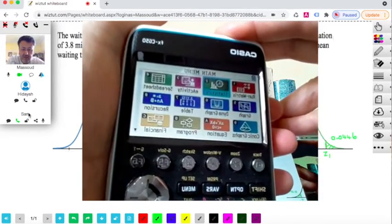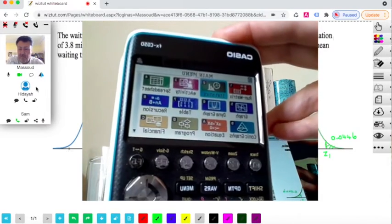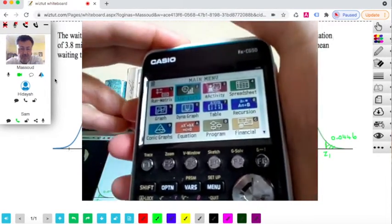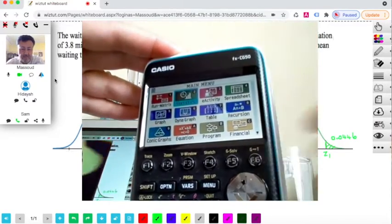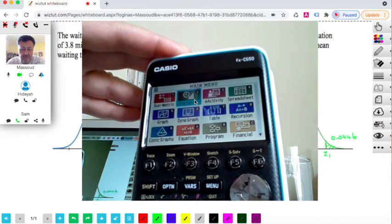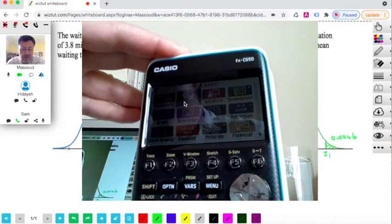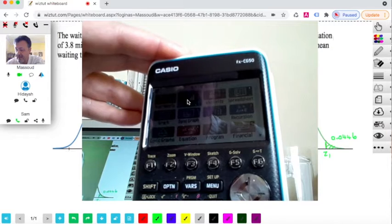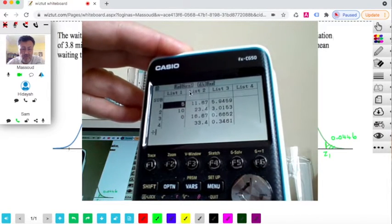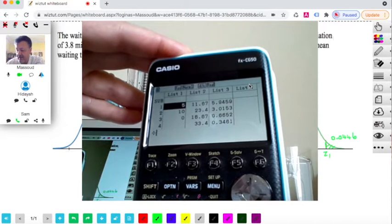And I hope that you can see the screen well enough. So on these calculators, let me turn the calculator around so you can see the options better. So on these calculators, you have an option for stats. So I'll be using the option for stats.